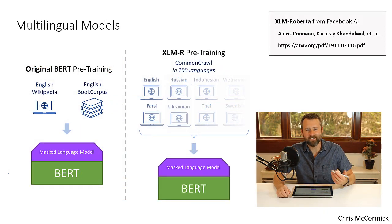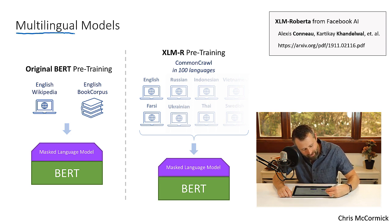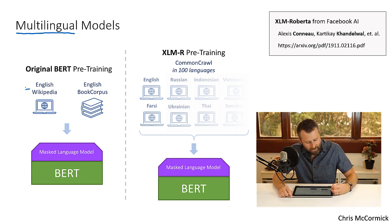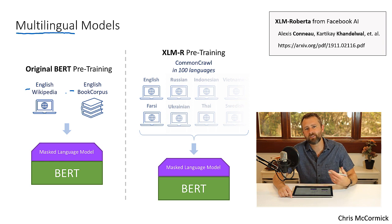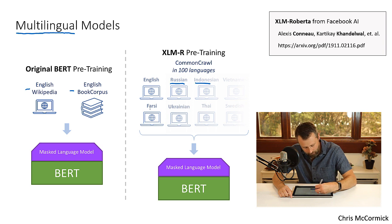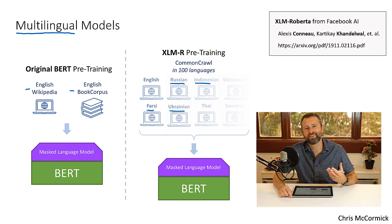Now let's talk about the actual focus of this video: multilingual models. The original BERT was trained on English Wikipedia as well as a dataset called Book Corpus, which was a collection of self-published books scraped off the web. With a multilingual model, really the only difference is that instead of just training on English, we give it text from every language. And we don't do anything to explicitly tell BERT what language we're giving it — we just feed it all in.